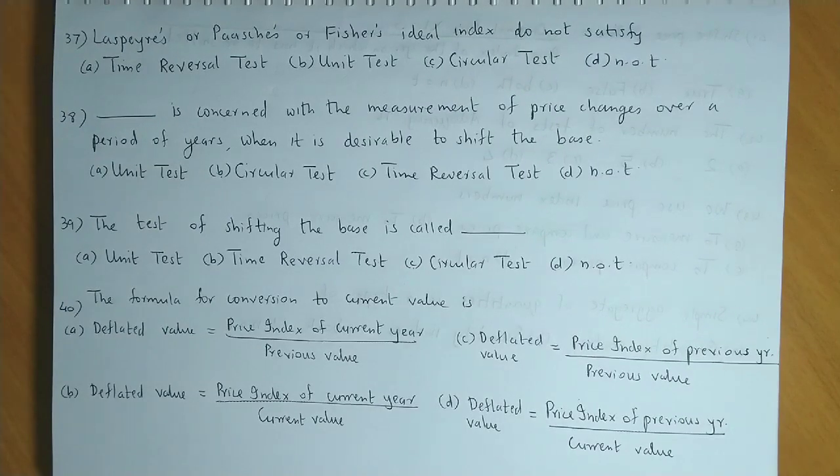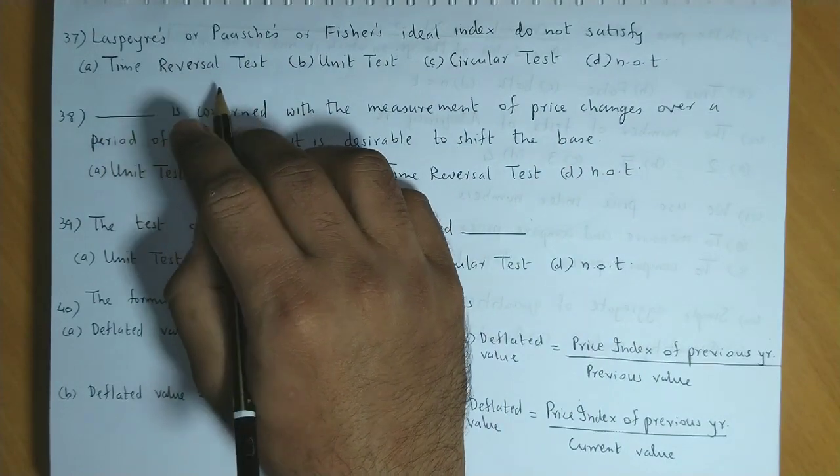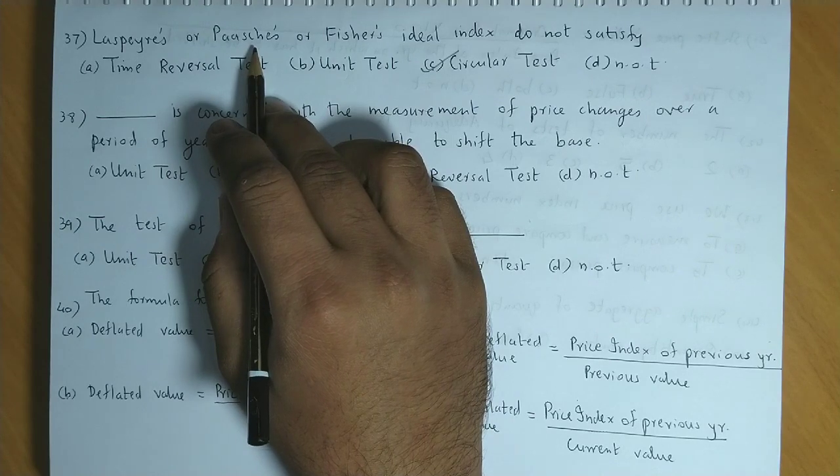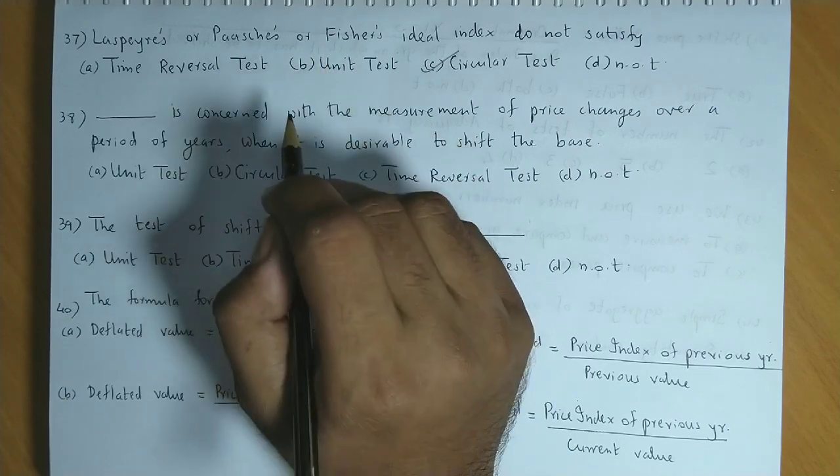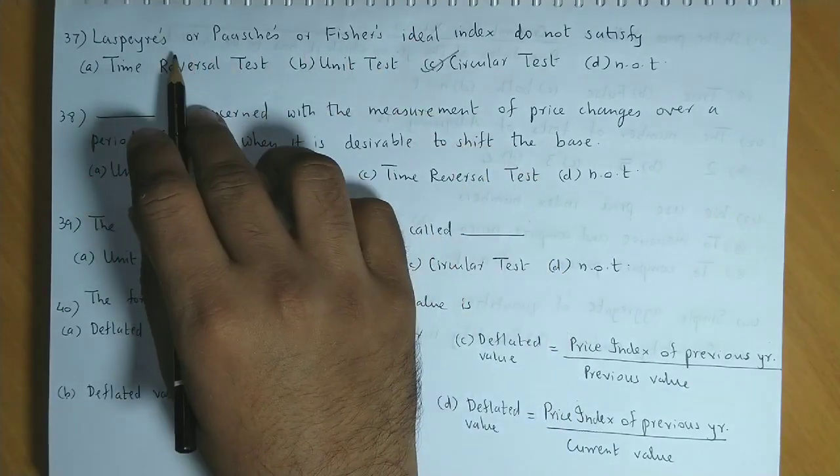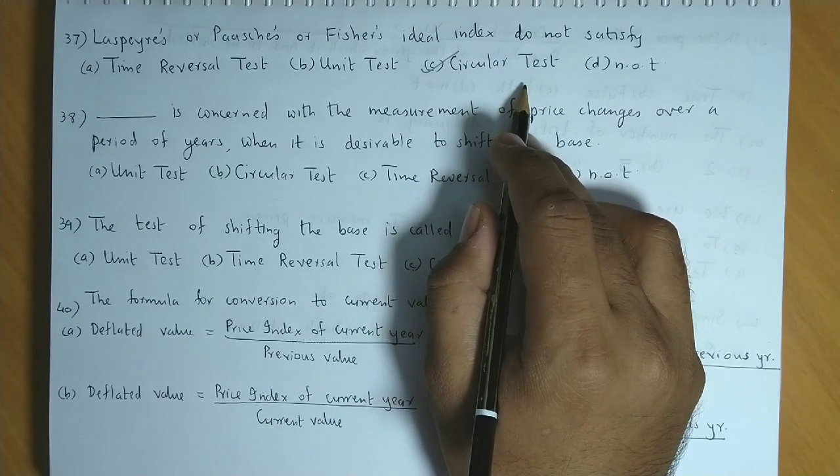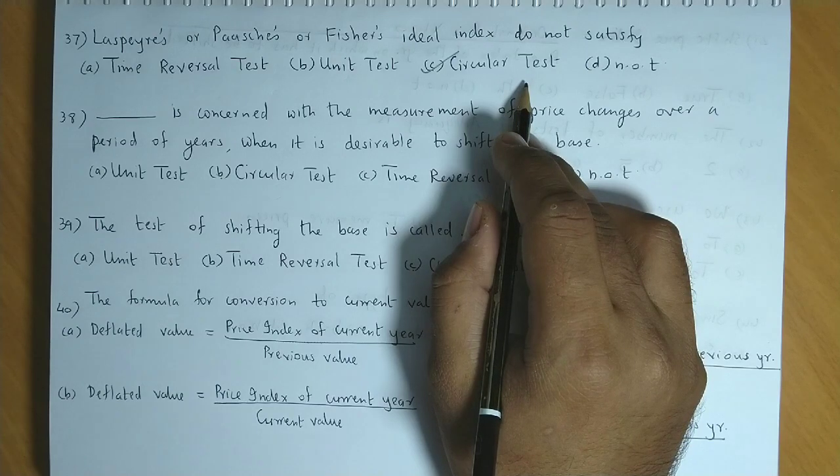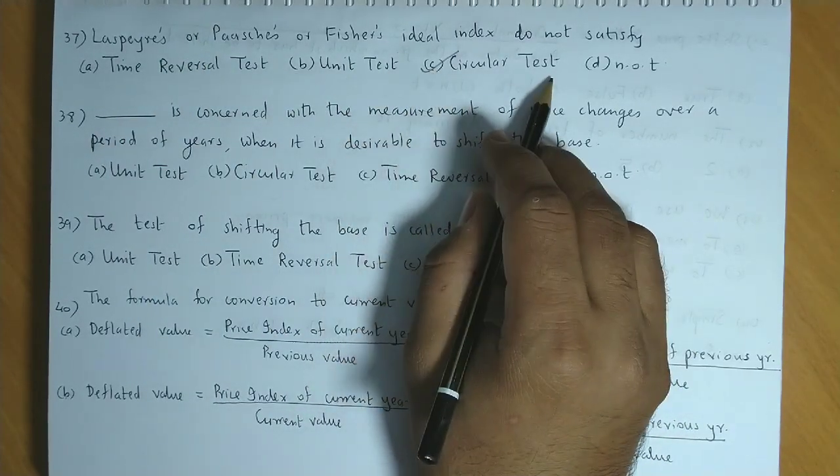Question number 37: Laspeyres or Paasche or Fisher's ideal index do not satisfy. Abh is ka answer hai circular test. Laspeyres and Paasche satisfy karte hai time reversal test. Fisher's satisfy karte hai factor reversal test. In circular test mein yeh teeno satisfy nahi hoote hai. So Laspeyres, Paasche and Fisher's index do not satisfy the circular test. Circular test is satisfied by the simple geometric mean of price relatives and the fixed weighted aggregative index, yaani Kelly's index. So is ka answer hai option C, circular test.